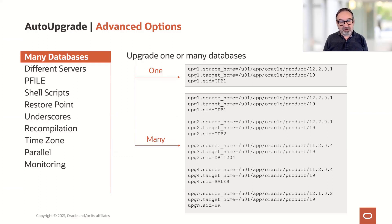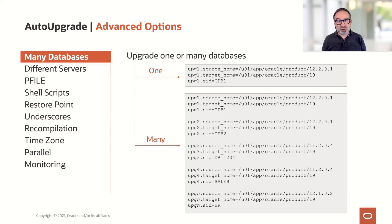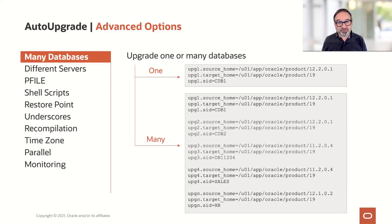In the second file here, we cover more databases and we use different prefixes. You don't have to go with upg1. You can use whatever you want — Mike, Hugo, Daniel, Fred — whatever is convenient for you, works for you. It could be also the database name. Whatever you want, you're free here, but you can cover hundreds and thousands of databases with one config file.